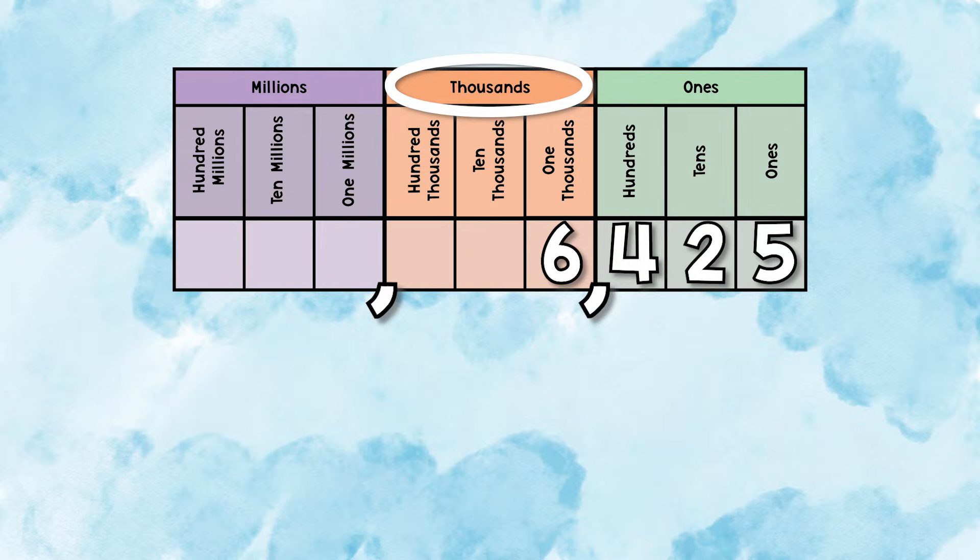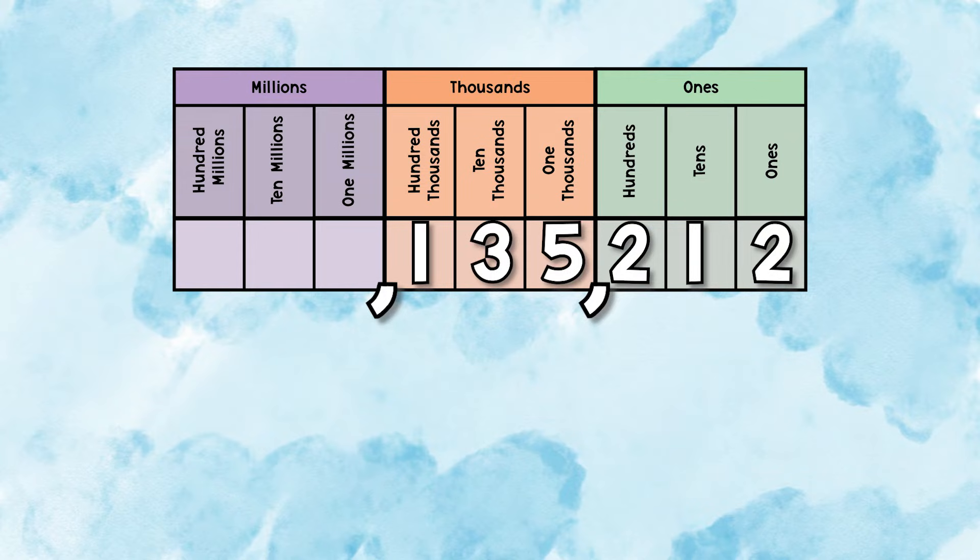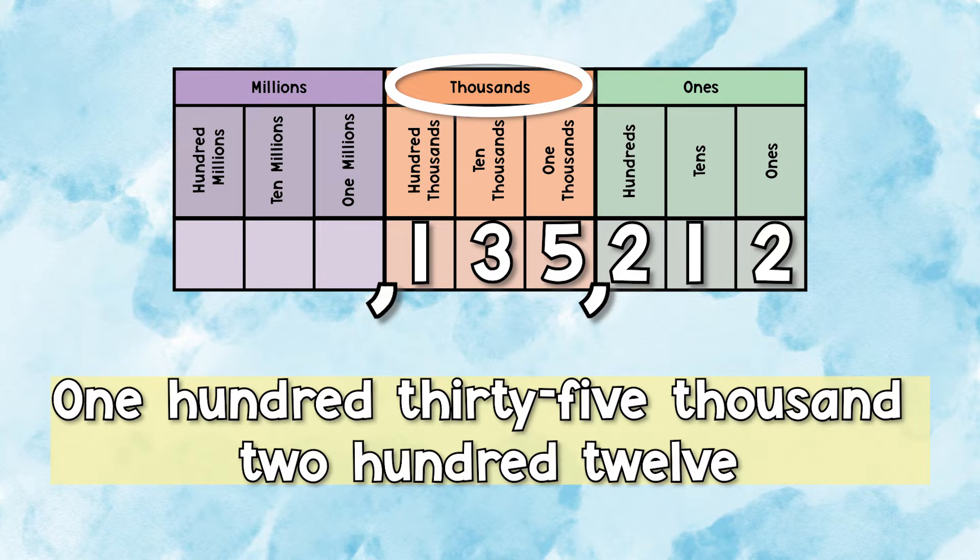Let's try another one. Alright, again, the 135 is in the thousands place. So when we see the comma, we're going to say the word thousands. This is 135,212.